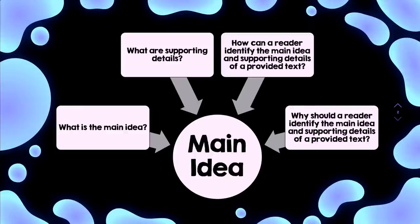What is the main idea? What are supporting details? How can a reader identify the main idea and supporting details of a provided text? Why should a reader identify the main idea and supporting details of a provided text?